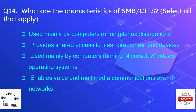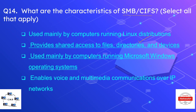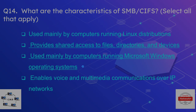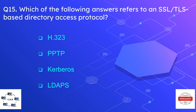Question number fourteen is: what are the characteristics of SMB or CIFS? Select all correct options. The correct options are: SMB and CIFS provide shared access to files, directories, and devices, and it is used mainly by computers running the Microsoft Windows operating system.